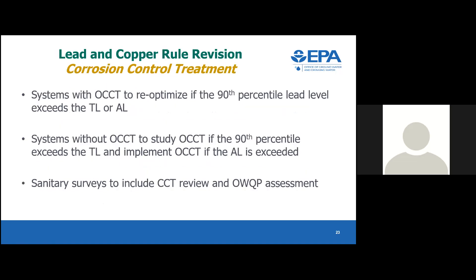Corrosion control treatment: systems with OCCT are needed to re-optimize if it exceeds the trigger level. Systems without OCCT would need to complete a study. A new element under the revision is that sanitary surveys will now include a review of a system's corrosion control treatment and their water quality parameter assessment monitoring.